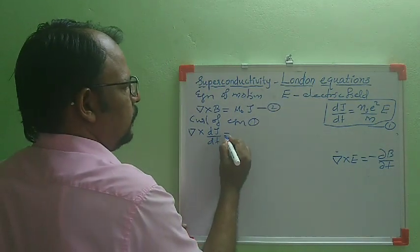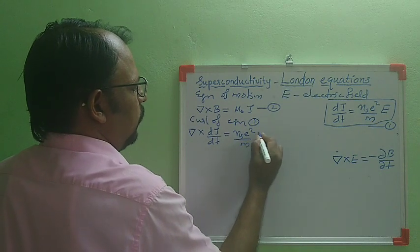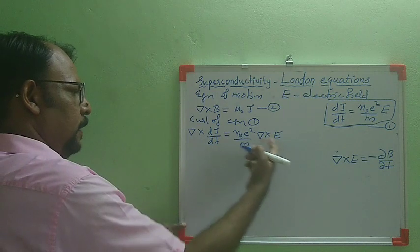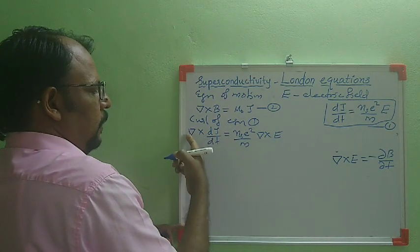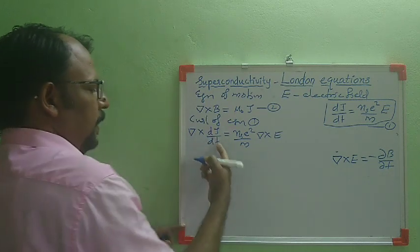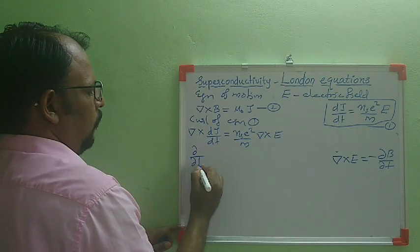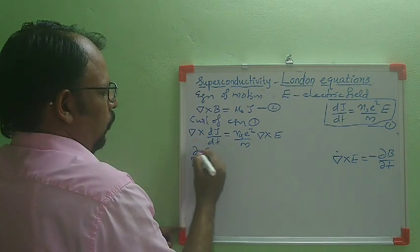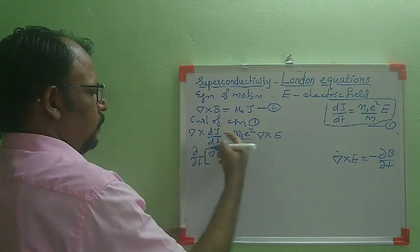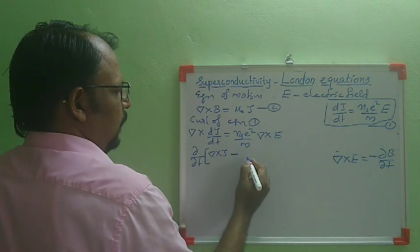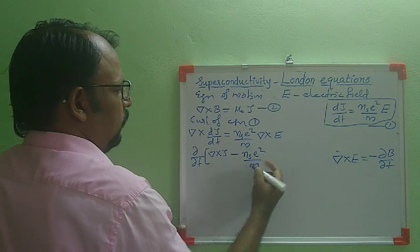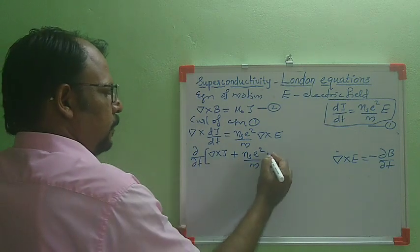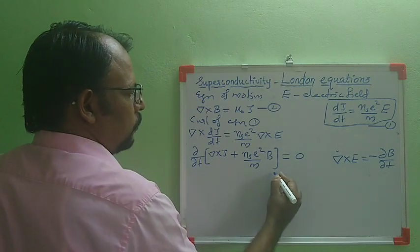Del × (dJ/dt) = (Nse²/M) · del × E. Using del × E = -∂B/∂t and interchanging the spatial and time derivatives, we can write ∂/∂t(del × J) = -(Nse²/M)·∂B/∂t. Taking this term to the left-hand side and factoring out ∂/∂t, we get: ∂/∂t[del × J + (Nse²/M)·B] = 0. This is equation 3.